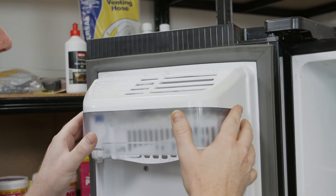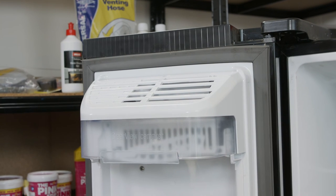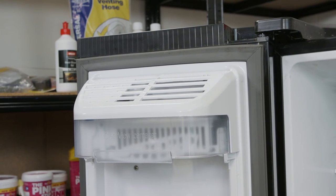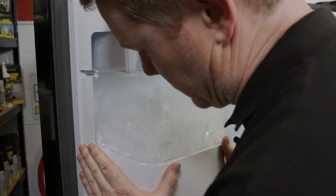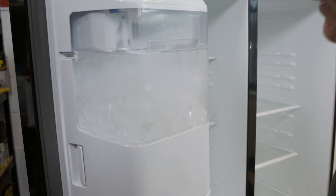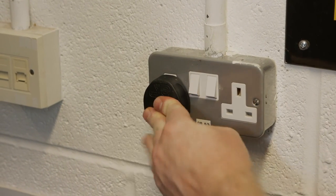Refit the ice maker cover and then replace the ice bucket. Hook it under the hooks at the top and then gently push into place. You can then plug your fridge freezer back in.